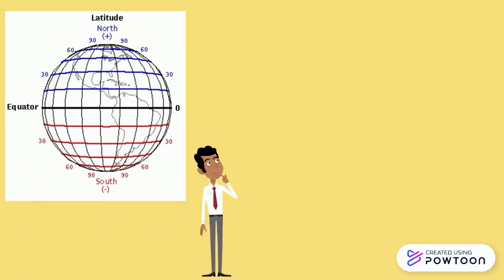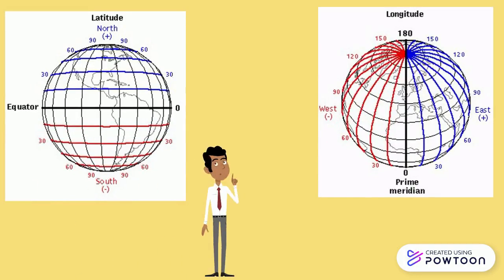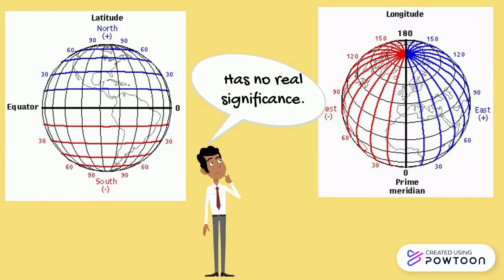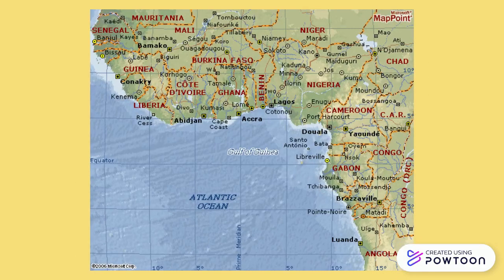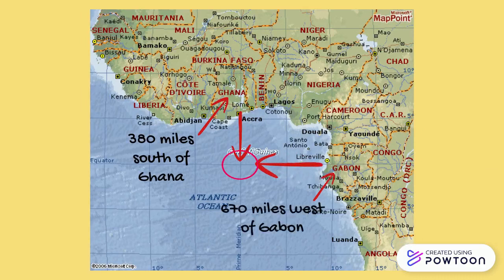The point at which the equator, zero degrees latitude, and the prime meridian, zero degrees longitude, intersect has no real significance, but it is interesting to find. It is near the continent of Africa in the Gulf of Guinea in the Atlantic Ocean. It is about 380 miles south of the country of Ghana and 670 miles west of the country of Gabon.